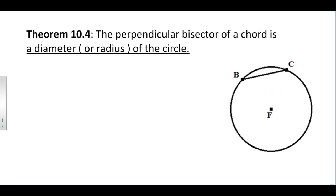Theorem 10-4 says that the perpendicular bisector of any chord of a circle is basically going to have to be part of the diameter or radius of that circle. So if I would create the perpendicular bisector of segment BC, that segment, if it's the perpendicular bisector, it would cut BC in half and make a right angle. If that's the case, it has to go right through the center of the circle and that would make it a diameter or a radius.